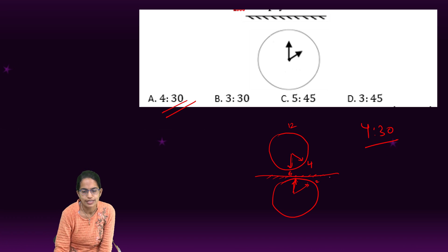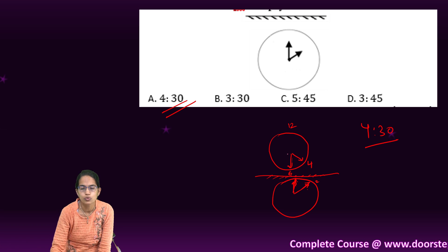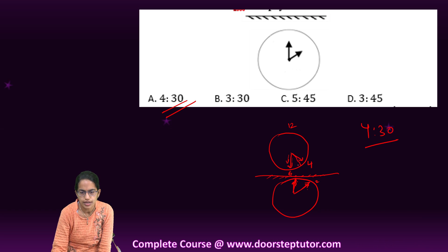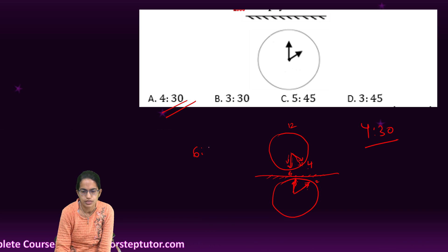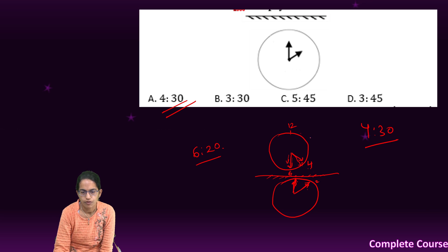If it was vice versa, that means my smaller end was on 6 and the bigger end was on 2, then in this case, the smaller end would be on 6, bigger end on 4. So at that time, what would be the time? It would be 6:20. Because the smaller hand is on 6 and the bigger hand is on 4. So if it is 4, it is 20. Because I start with 0 here, 5 minute interval.